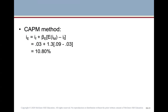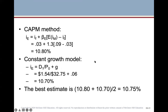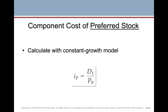Using the constant growth model: iE equals dividend one divided by price zero plus the growth rate — that's $1.54 divided by $32.75 plus 6%, which gives 10.7%. To get the best estimate, we average the two methods: (10.8% + 10.7%) / 2 = 10.75% as the best estimate for the cost of common equity for ADK.